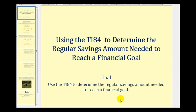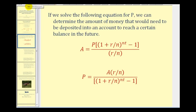Welcome to a lesson on using the TI-84 graphing calculator to determine the regular savings amount needed to reach a financial goal. In the previous video we discussed how we use the value of an annuity formula solved for P to determine the regular savings amount to reach a financial goal in the amount of A. So P was the regular savings amount and A was the financial goal. However for this video we'll show how we can use the financial feature of the graphing calculator to answer these questions quickly.